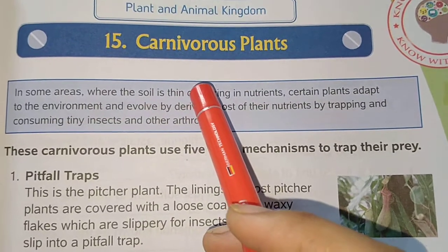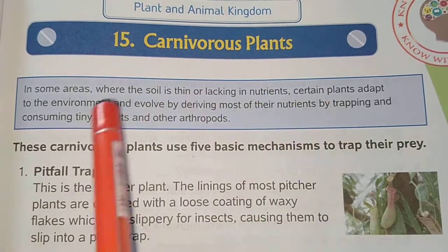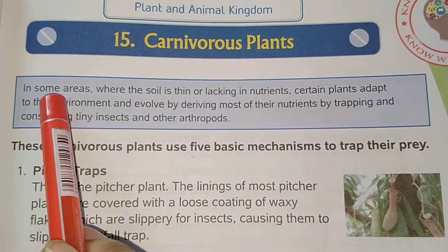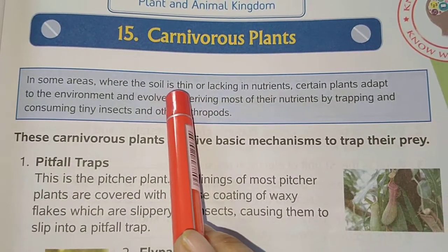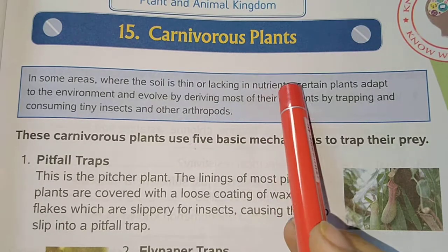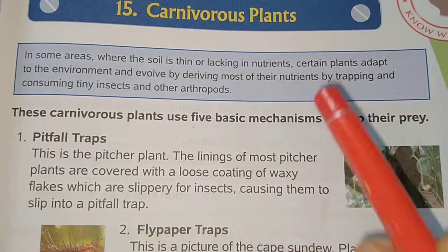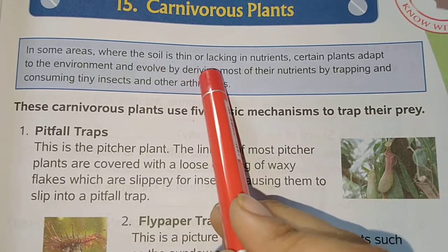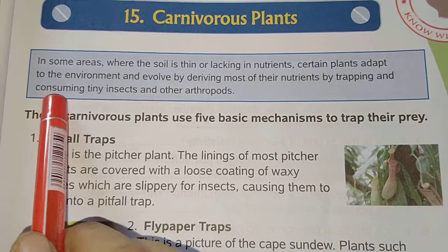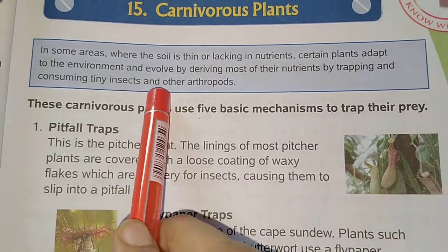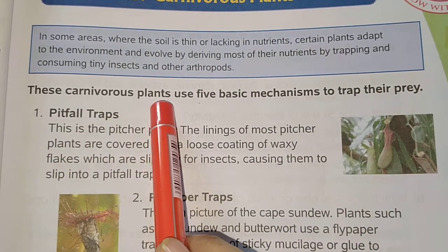We will continue our next chapter, that is Chapter 15: The Carnivorous Plant. In some areas where the soil is very thin or there is a lack of nutrients, certain types of plants adapt in that place. They evolve by deriving most of their nutrients by trapping and consuming tiny insects and other arthropods. In this chapter we will study some of the carnivorous plants.